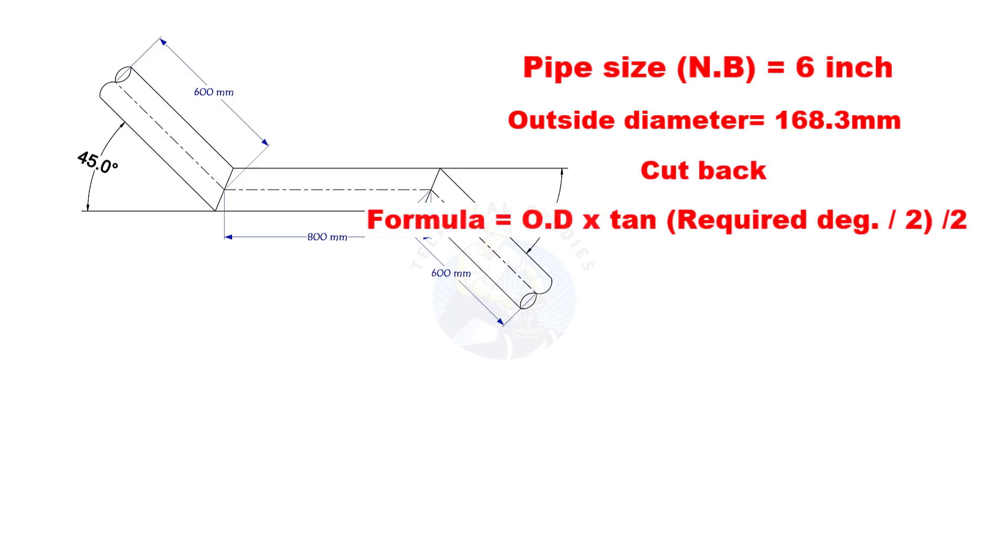Cutback is O D multiplied by tan half degree, divided by 2. Here, the required degree is 45. Half of 45 is 22.5.